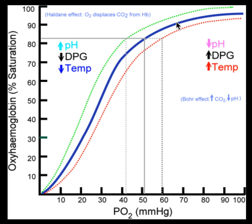Then this S-shaped curve goes into a very steep downhill area. When hemoglobin gets into environments where the oxygen level is below about 60 millimeters of mercury — getting into some active tissues that are consuming oxygen and pushing it down — hemoglobin starts to behave differently. For a small change, looking at between 50 and 40 millimeters of mercury, you get a very large change in the amount of oxygen bound to hemoglobin, meaning hemoglobin is giving off oxygen to those active tissues.